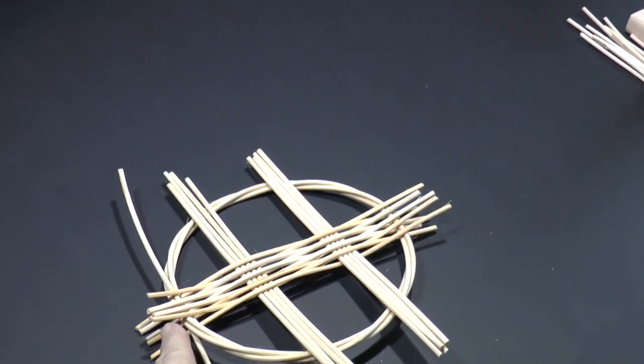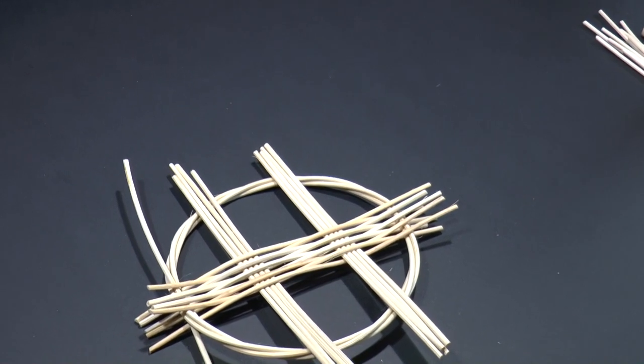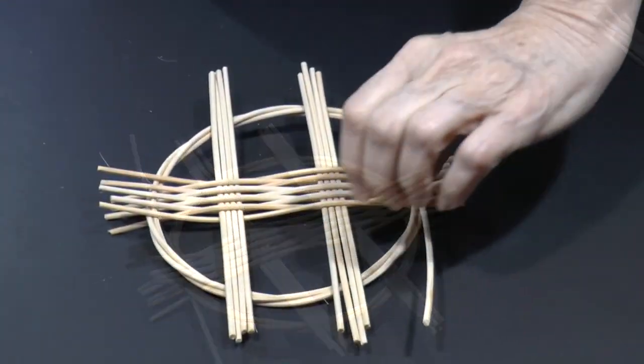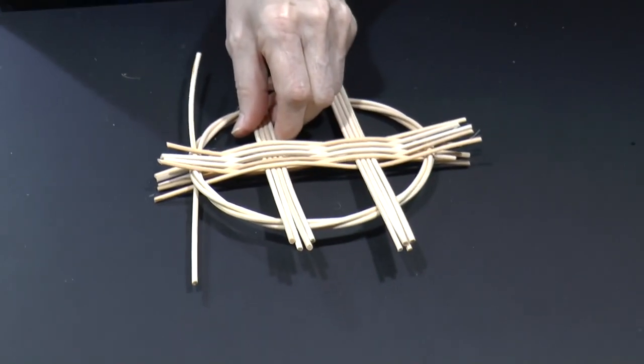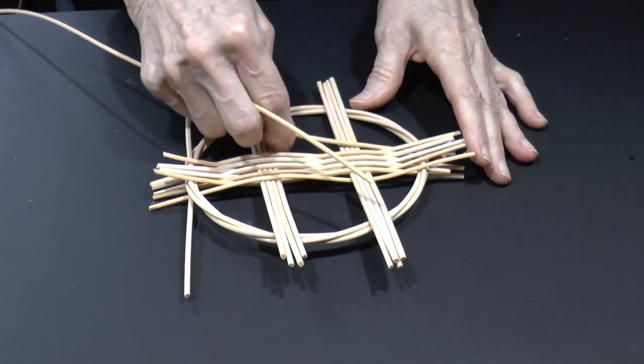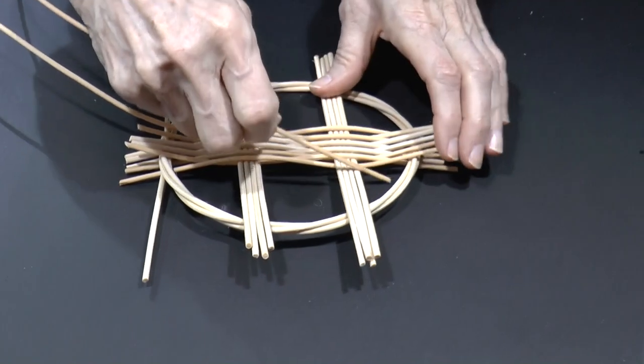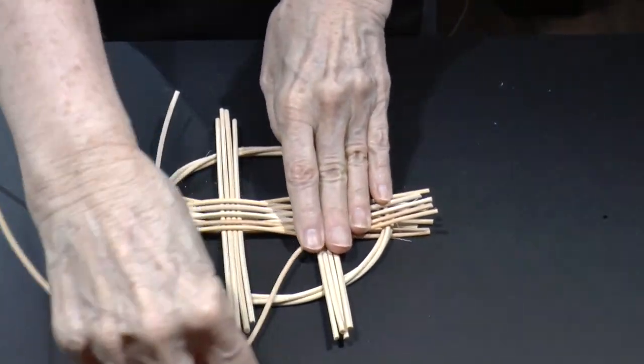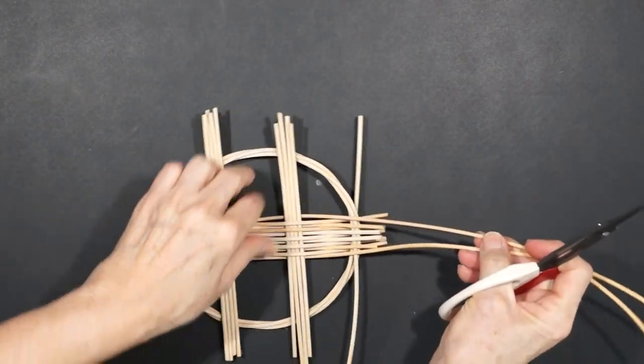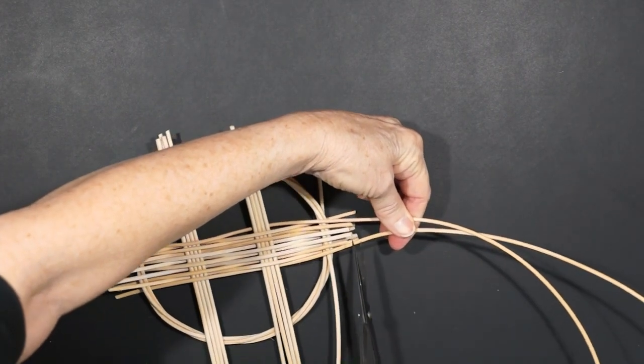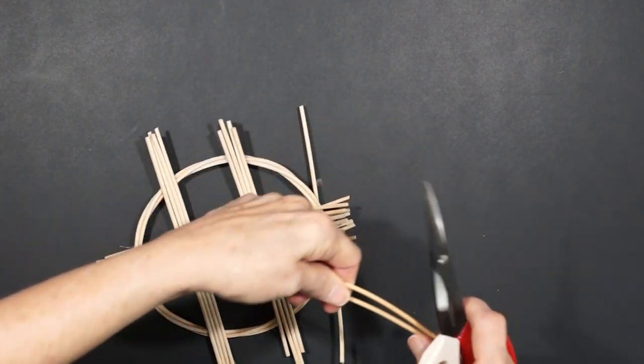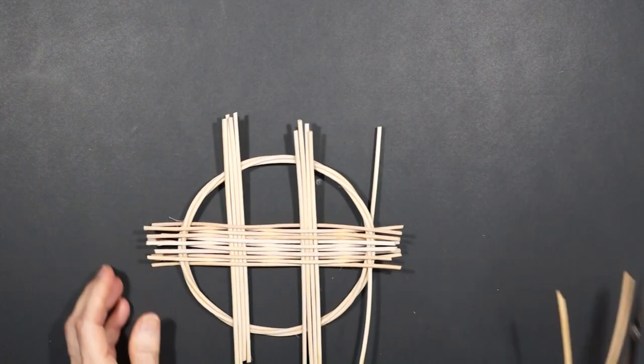Don't worry about how ragged the ends look right now. We're going to trim those as we finish the trivet. Turn the trivet 180 degrees again. Starting under the ring with both ends of the weaver. Over, under, over, cut. We'll continue weaving back and forth until we get all the way to the outer edges of the ring.